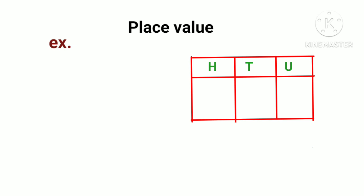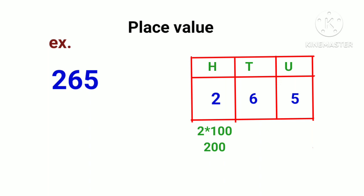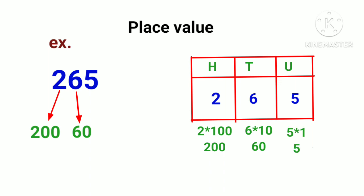Let's see one more example: 265. Now I write number 2 in the 100s column, number 6 in the 10s column, and number 5 in the units or 1s column. So 2 into 100 is equal to 200, so 2's place value is 200. 6 into 10 is equal to 60, so 6's place value is 60. And 5 into 1 is equal to 5, so 5's place value is 5.